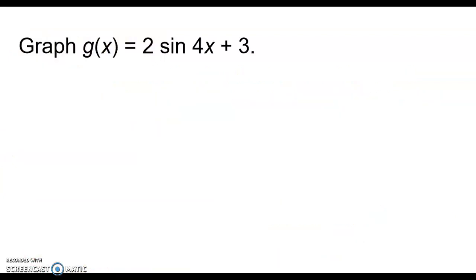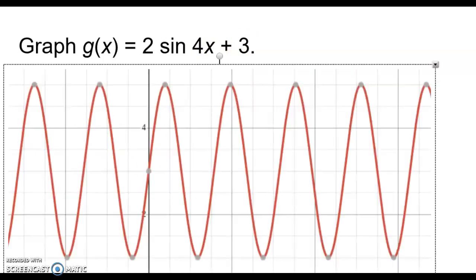Let's say we have this equation right here. Graph G of X equals 2 sine of 4X plus 3. So right here, I'm just going to make some mental notes to myself. 2 is the amplitude, so that's how tall the graph is going to get. 4, that represents part B. 2 is A, 4 was B, and then 3 is what's being added. So that's K.